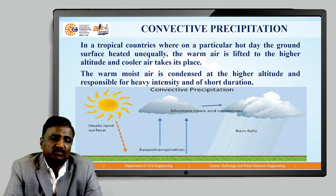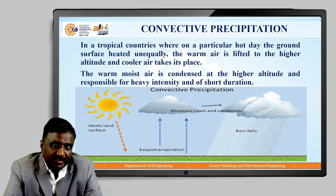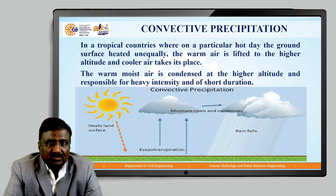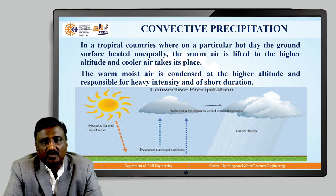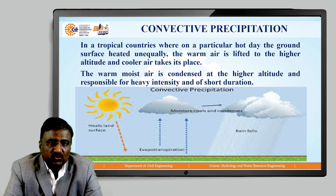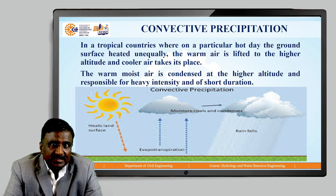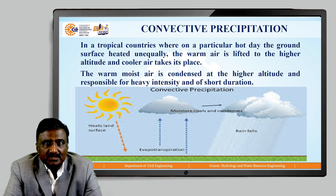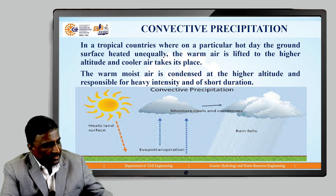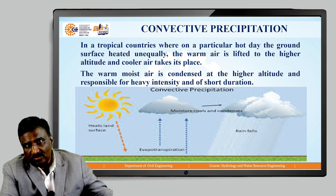The water vapours get stored in the form of clouds, and due to condensation, precipitation again occurs in various forms like rain, snow, hail, dew, mist, etc. This is exactly how convective precipitation occurs.